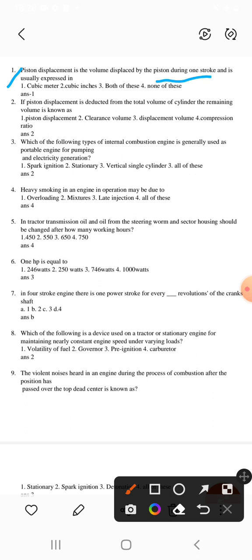Question 3: Which of the following type of internal combustion engine is generally used as portable engine for pumping? Stationary engine, so second option will be correct. Question 4: Heavy smoking in engine operation may be due to overloading, mixture's late ignition, or all of these. Fourth option will be correct.